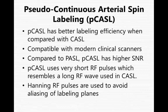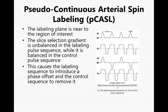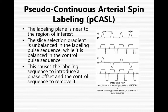Hanning RF pulses instead of rectangular RF pulses are used to avoid aliasing of the labeling planes. In PCASL, the labeling plane is near to the region of interest. On the right side, you can see the two labeling sequences used in PCASL. The sequence marked with A is the labeling pulse sequence, while the sequence marked with B is the control pulse sequence. The slice selection gradient is unbalanced in the labeling pulse sequence, while it is balanced in the control pulse sequence.